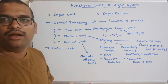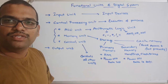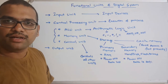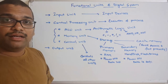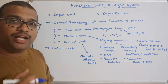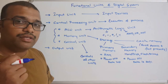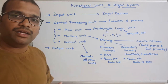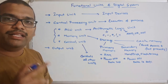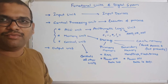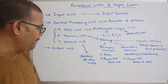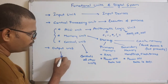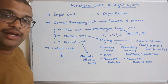These three units — ALU, control unit, and memory unit — combined are called the central processing unit, which is called the processor. Whatever instructions we are executing in the computer will be executed only by the processor.